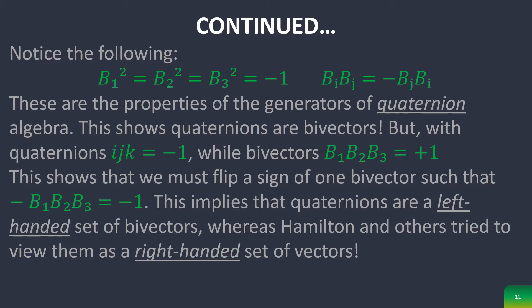However, with quaternions, i, j, k is equal to negative 1, while bivectors b sub 1, b sub 2, b sub 3 is equal to positive 1.